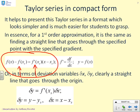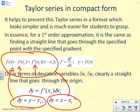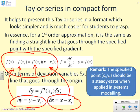If you look at deviation variables delta_x and delta_y, you'll find it reduces to a straight line that goes through the origin. Delta_y equals y minus y_s and delta_x equals x minus x_s, so the equation reduces to: delta_y equals f'(x_s) times delta_x. Writing the Taylor series in terms of deviation variables gives a straight line through the origin. Note that the specified point x_s, y_s needs to be a steady state when applying this technique in systems modeling — make sure you're at steady state before using these approximations.